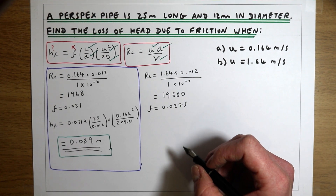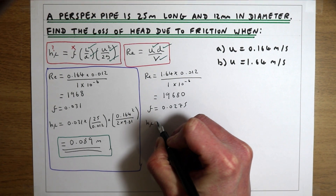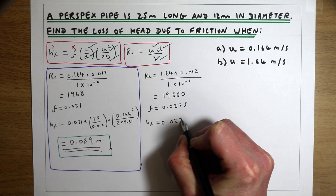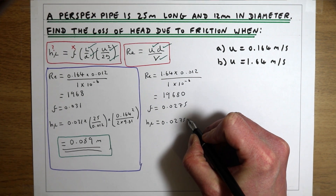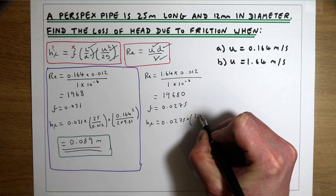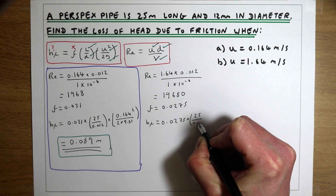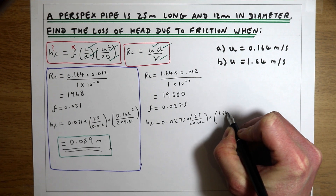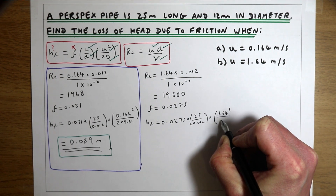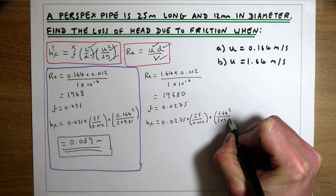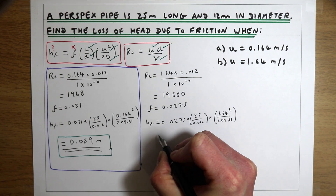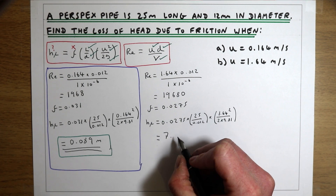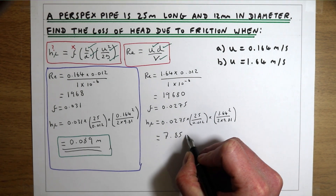Plugging the numbers into the HF equation: HF = 0.0275 × (25 / 0.012) × (1.64² / (2 × 9.81)), which gives us a total loss of head of 7.85 metres.